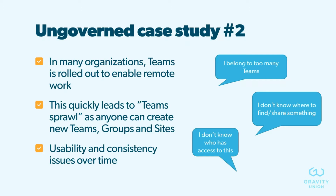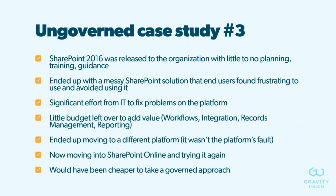Another common symptom of an ungoverned model is with Microsoft Teams. It's really easy to roll out — we saw this in the early days of the pandemic where Teams was deployed quickly to enable remote work. Teams sprawl happens fast because anyone can create new teams, and behind the scenes that's creating groups, SharePoint sites, and even email addresses. Users aren't always aware they're creating these things. Common complaints include: 'I belong to too many teams,' 'I don't know where to find something,' and 'I don't know who has access.'